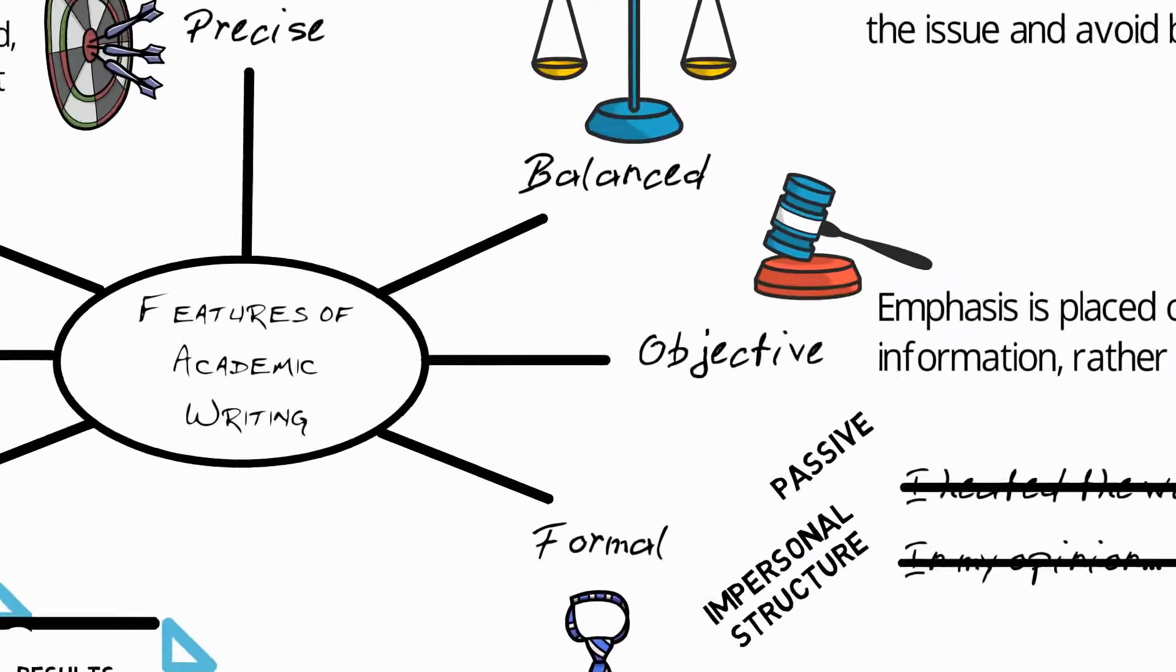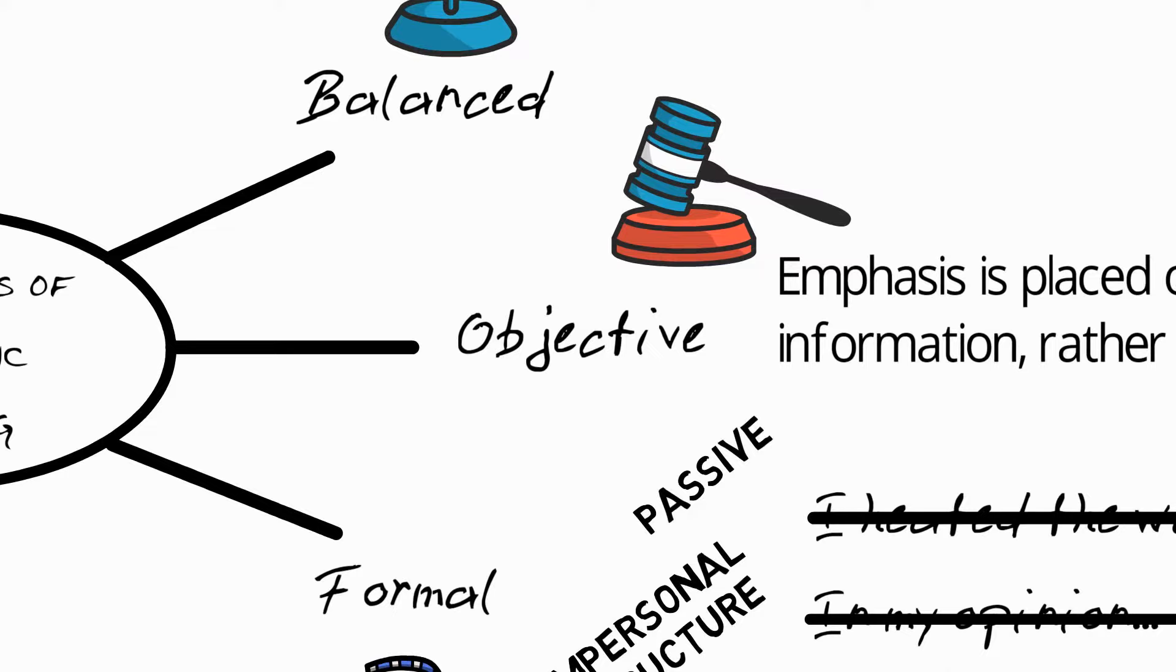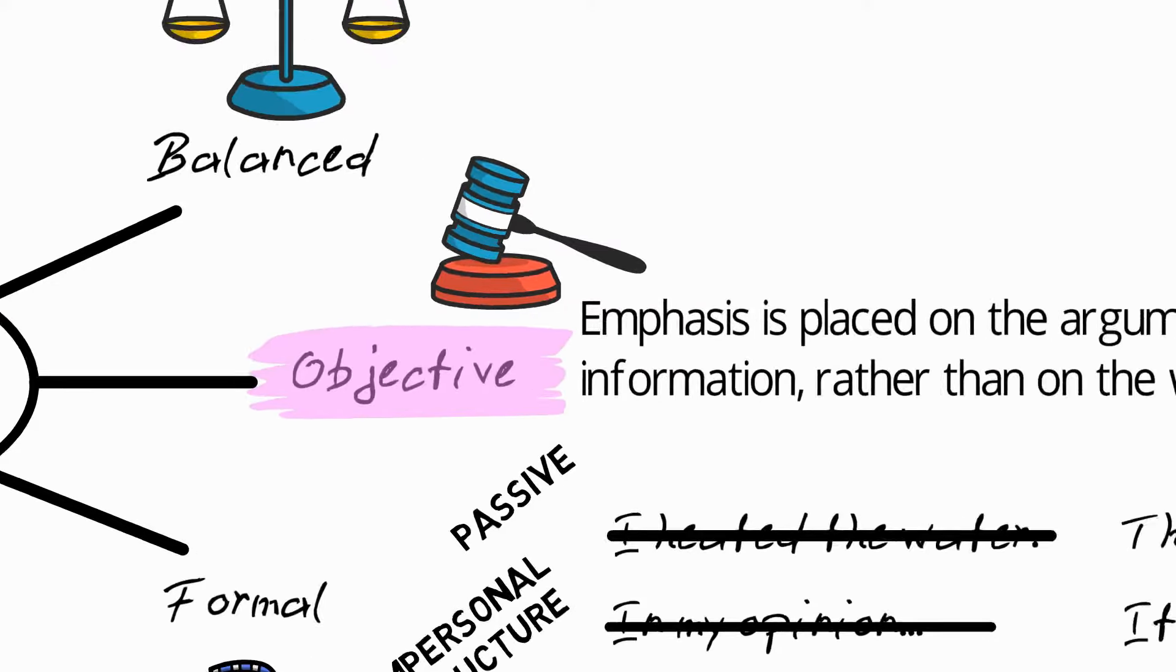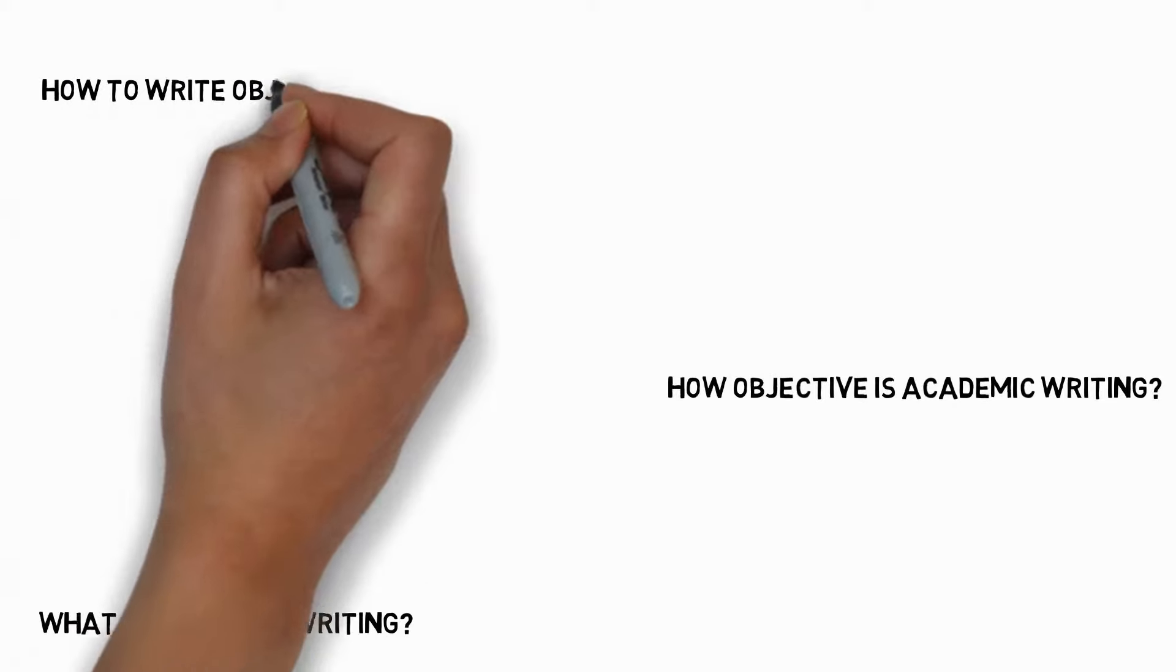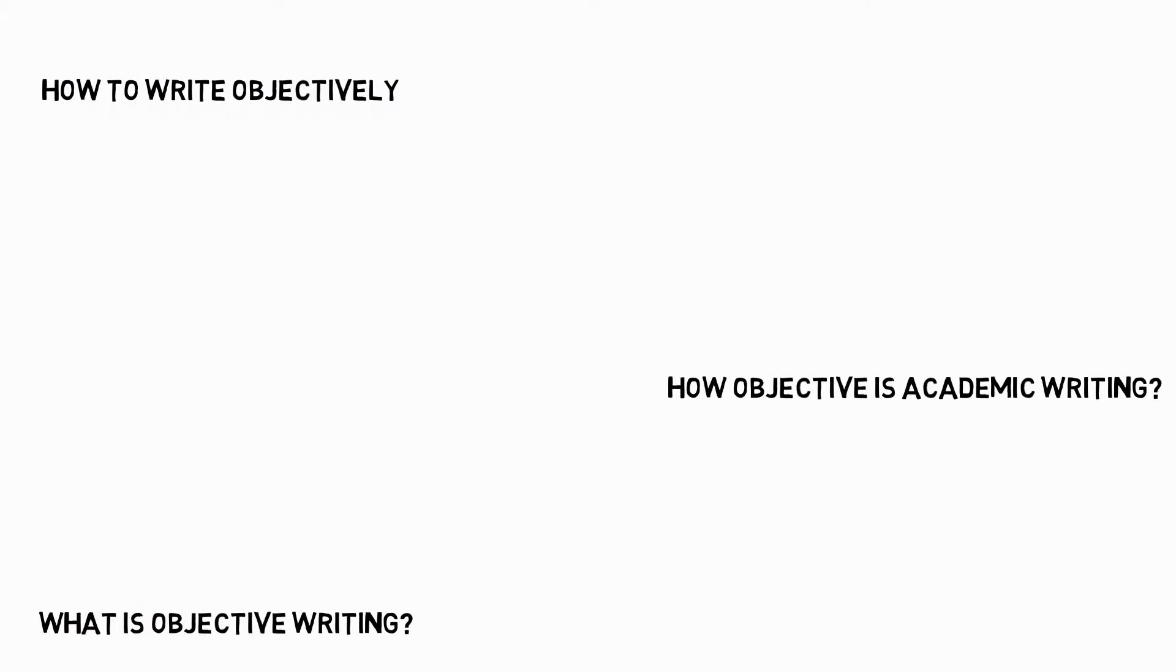This video will focus on just one of those aspects, namely objectivity in academic writing. We'll look at three areas. First, we'll answer the question what is objective writing, then we'll consider how objective academic writing actually is, then in the main part of the video we'll see different ways to write objectively.